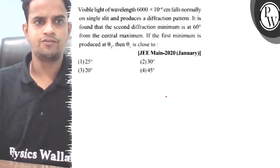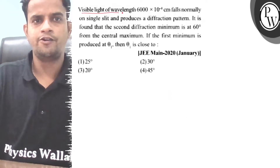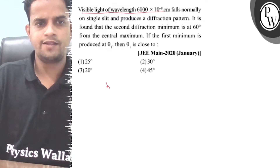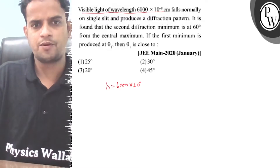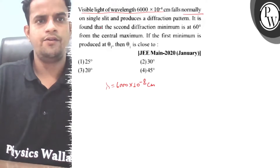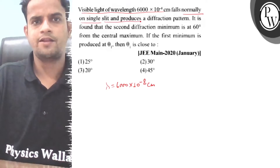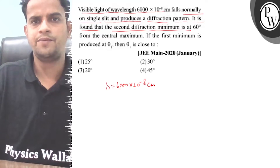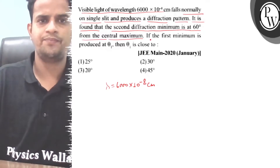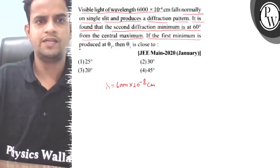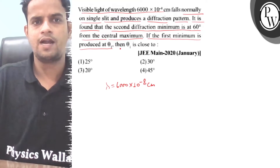Hello, let's consider this question. Visible light of wavelength 6,000 × 10⁻⁸ cm falls normally on a single slit, and in the diffraction pattern it is found that the second diffraction minimum is at 60° from the central maximum. If the first minimum is produced at angle θ₁, then θ₁ is close to?